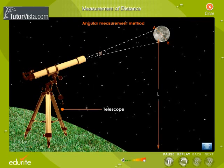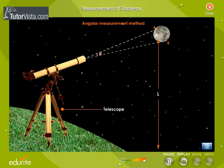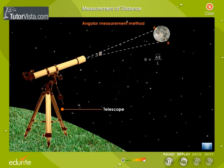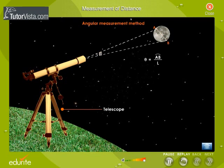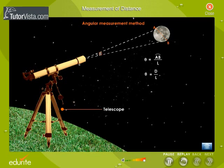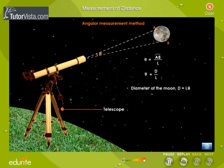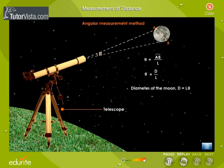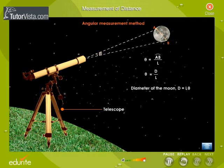Let L be the distance of the Moon from the Earth. If we consider the diameter of the Moon as a circular arc of radius L, then we get theta = arc AB/L. Theta = D/L. Diameter of the Moon, D = L theta. If we know the distance of the Moon from Earth and the angle, the diameter of the Moon can be determined.